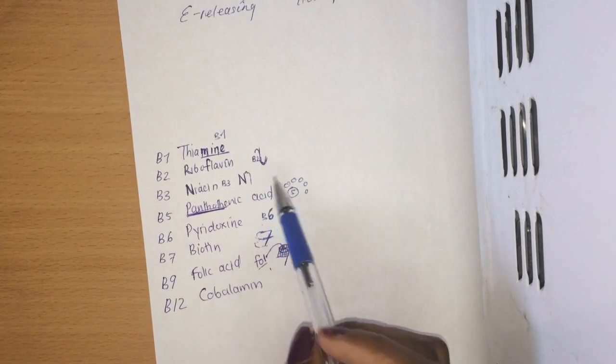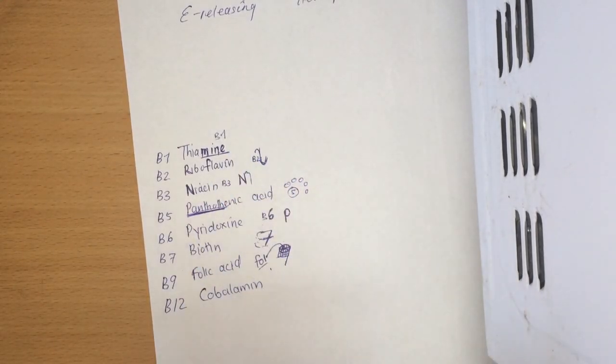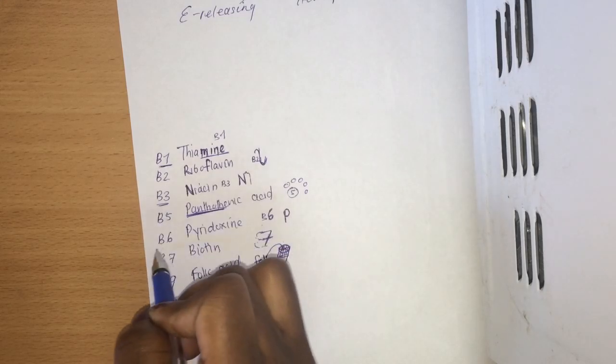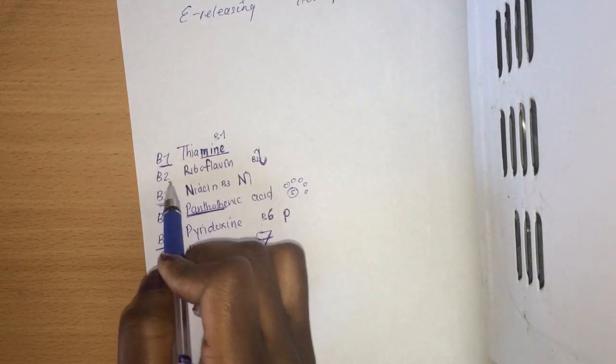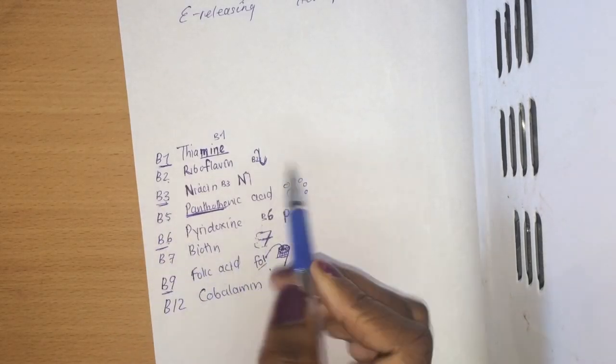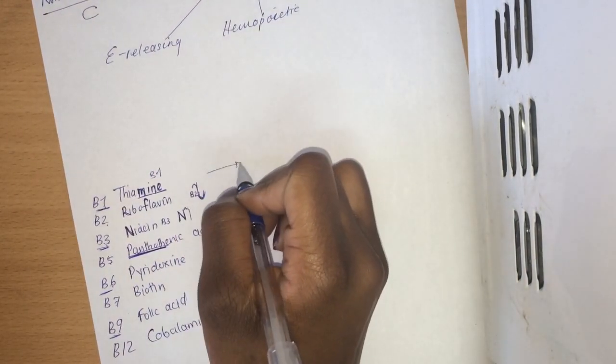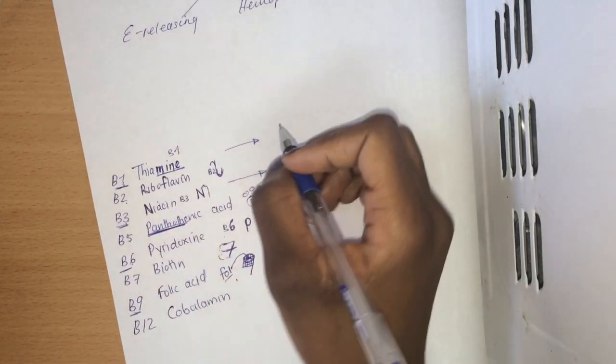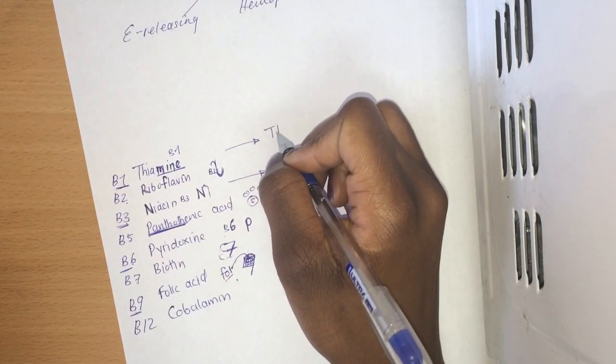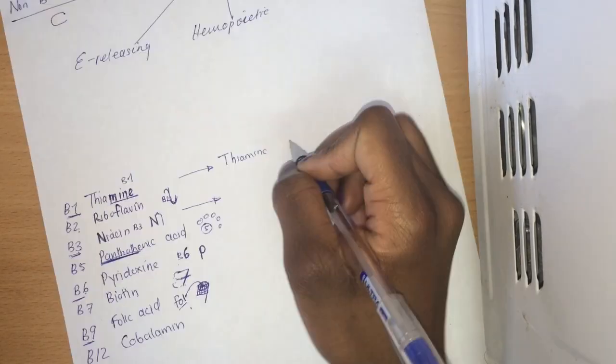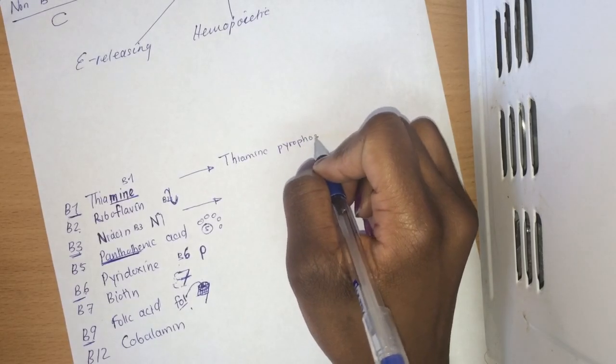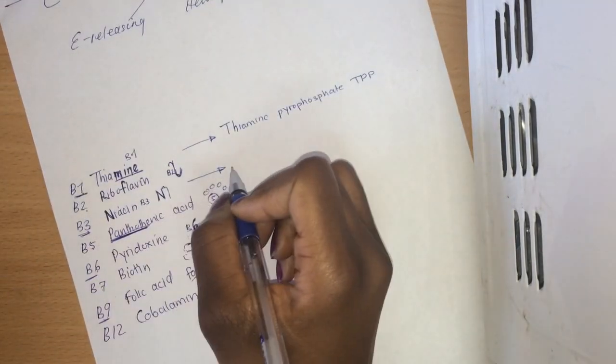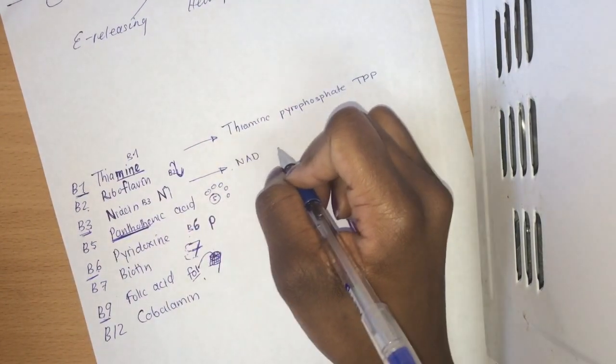These B vitamins have coenzymes that have specific names, and the ones with specific names are B1, three, six and nine. Basically just start from one and skip, select, skip, select, skip, select. They have specific names and the names are as follows. For thiamine we have thiamine pyrophosphate and it is abbreviated as TPP.